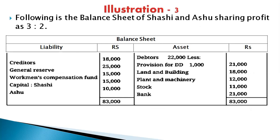Exercise 3: Sassy and Asu are partners sharing profit in the ratio 3:2. Balance sheet shows: debtors 22,000 minus provision 1,000 = 21,000; land and building; plant and machinery; stock; bank. Liabilities: creditors 18,000, general reserve, workmen compensation fund 15,000, outstanding expenses, and capital of both partners. General reserve is distributed among old partners in old ratio. For workmen compensation fund, if a liability is given, only the remaining amount is distributed.